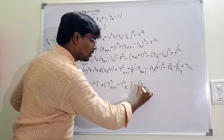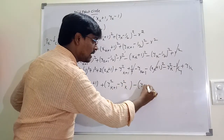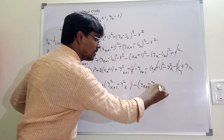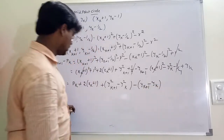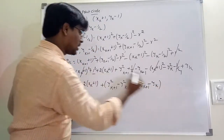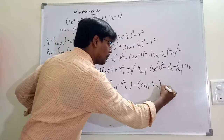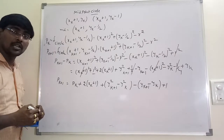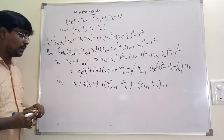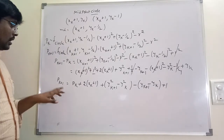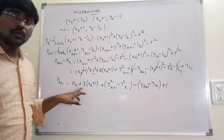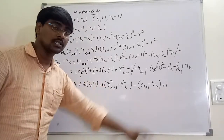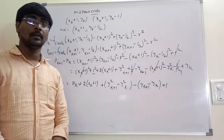So pk+1 equals pk plus 2(xk+1) plus the y-squared terms (y²k+1 - y²k) minus (yk+1 - yk). This gives us the recurrence formula for the decision parameter pk+1.